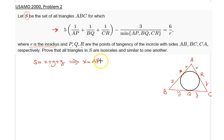First of all, let's establish that the semi-perimeter is x plus y plus z. This implies that x, which is simply AP, is equal to s minus a. In a similar way, y which is equal to BQ is equal to s minus b, and z which is equal to CR is equal to s minus c.